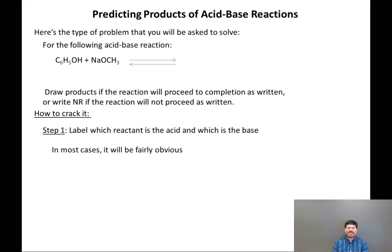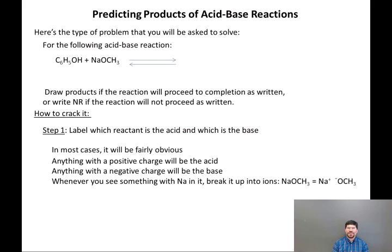In most cases, it will be fairly obvious, or at least one of them will be fairly obvious, because as we've discussed, there are some molecules called amphoteric compounds that are capable of acting as either an acid or a base. Some rules of thumb: if it has a positive charge, it's going to be the acid. If it has a negative charge, it will almost always be the base.